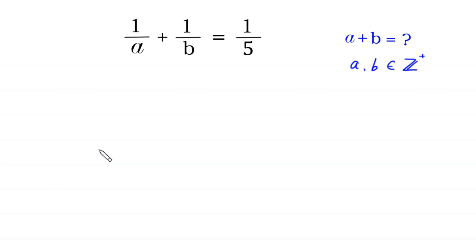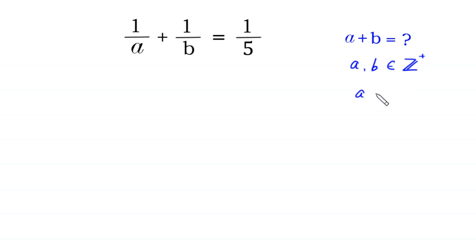Welcome. We need to solve the algebra equation: 1 over a plus 1 over b is equal to 1 over 5. We need to find all possible values of a plus b, where a and b are positive integers — meaning a is greater than 0 and b is greater than 0.